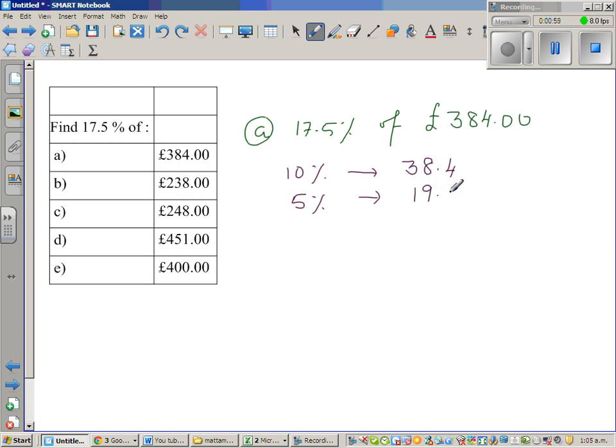And again 2.5% is again half of 5%. So half of 19 is 9.5 and then you got 0.1, so this is £9.6. Okay, so this is 15% and this is 17.5%, so that would be this many pounds.